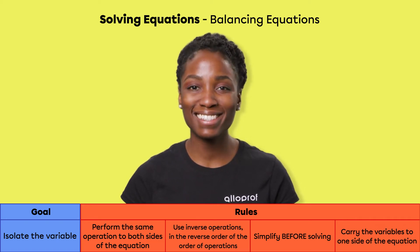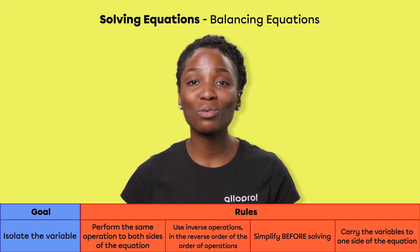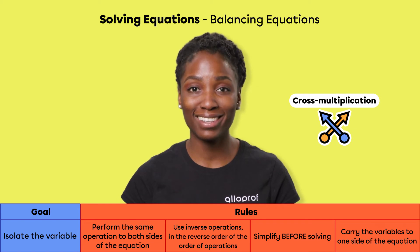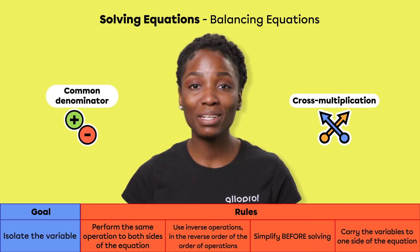If there is just one fraction on either side of the equal sign, we can use a cross-multiplication strategy. If there are multiple fractions that need to be added or subtracted, a common denominator for them must be found first. Finally, with some manipulation, the denominators can be eliminated.